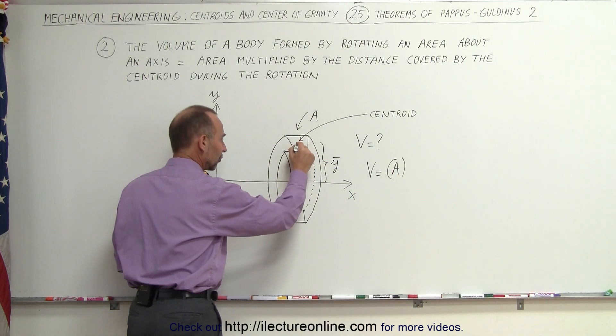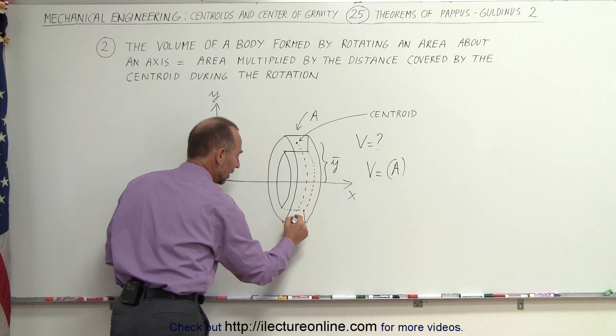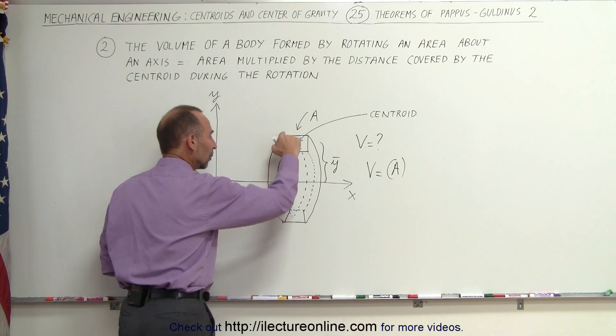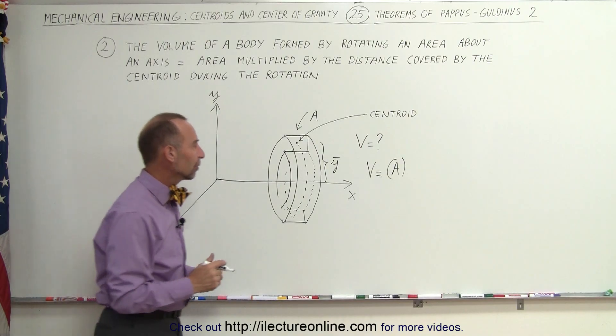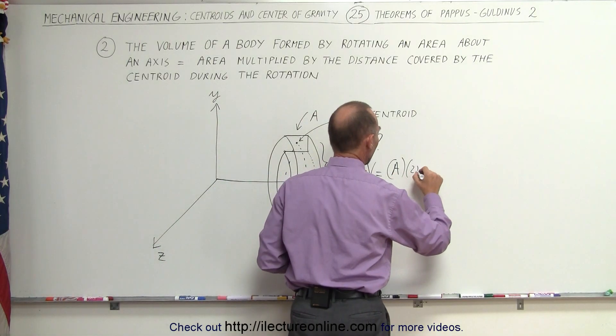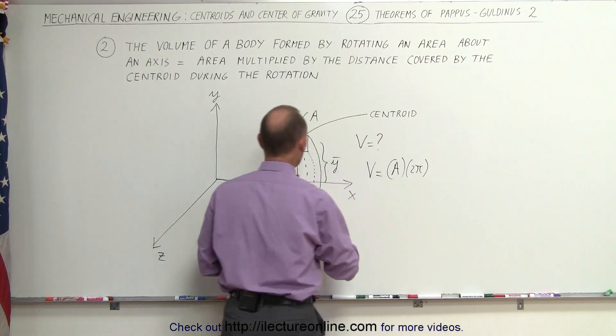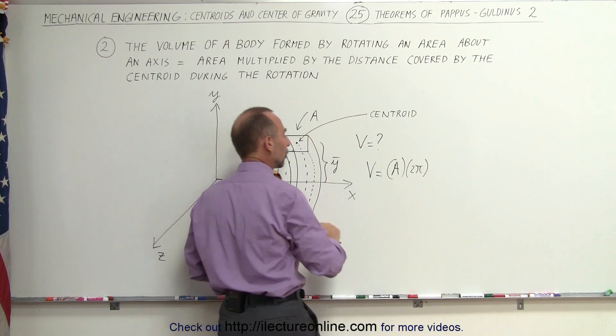The centroid will travel as its distance. The centroid will go around like this and then around back like that. It will make a circular path. The length of a circle is 2π times the radius so we multiply this times 2π and the radius in this case will be the y coordinate of the centroid of that area.